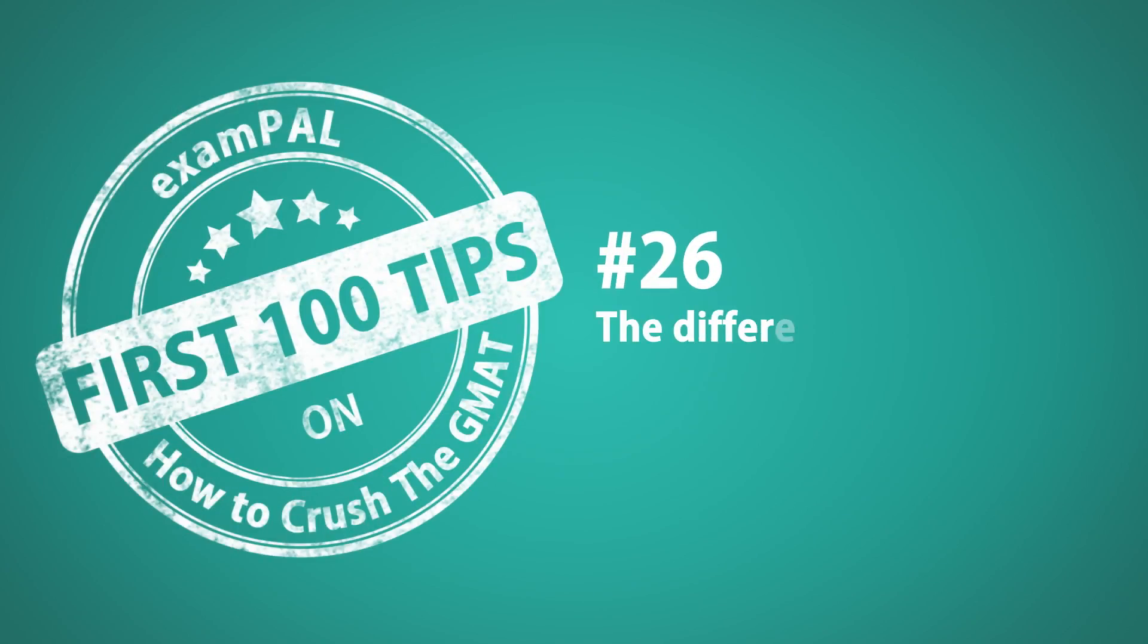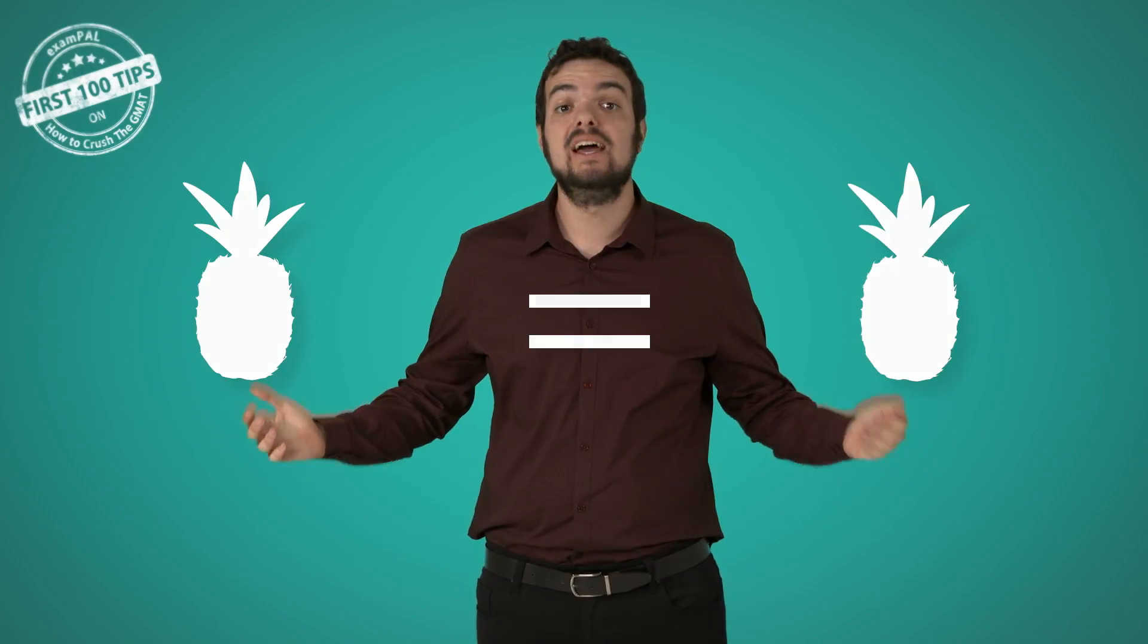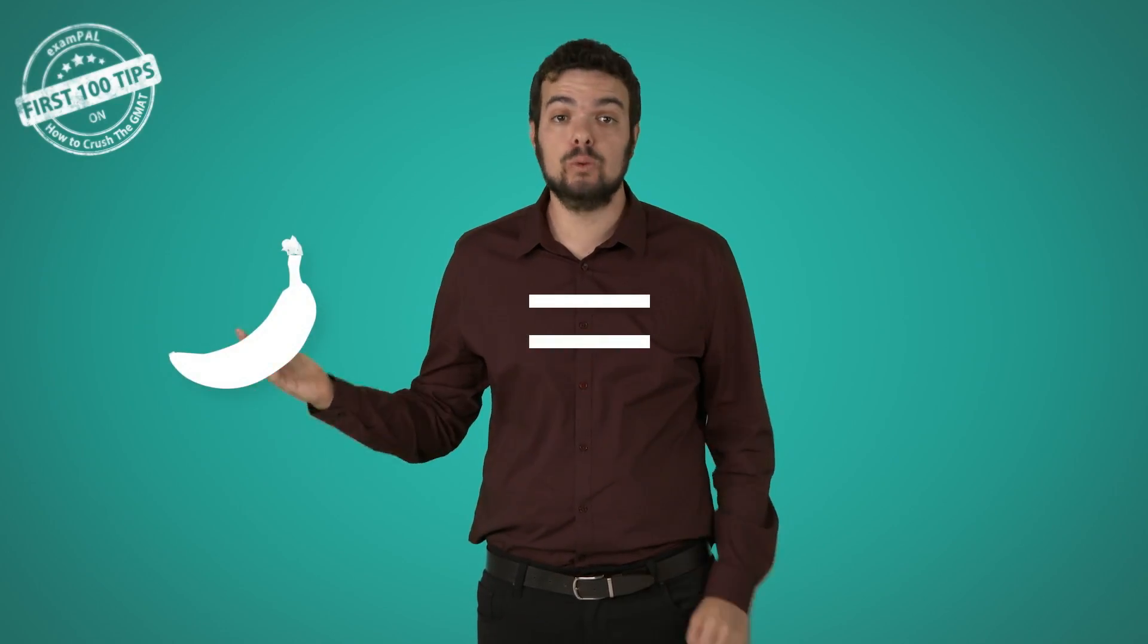Number 26. The difference between expressions and equations. An equation has two sides. An expression has only one. But more importantly, when we're asked to find the value of a variable in an equation, that means it appears in the answers. So in an equation, we can use the answers. On the other hand, a variable in an expression can take any value, which means that we can plug in any number. For example, the value of 2 times x over x is always 2, no matter which x we choose.